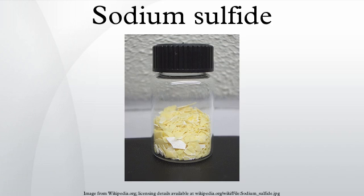Some commercial samples are specified as Na2S·xH2O, where a weight percentage of Na2S is specified. Commonly available grades have around 60% Na2S by weight, which means that x is around 3. Such technical grades of sodium sulfide have a yellow appearance owing to the presence of polysulfides. These grades of sodium sulfide are marketed as sodium sulfide flakes.